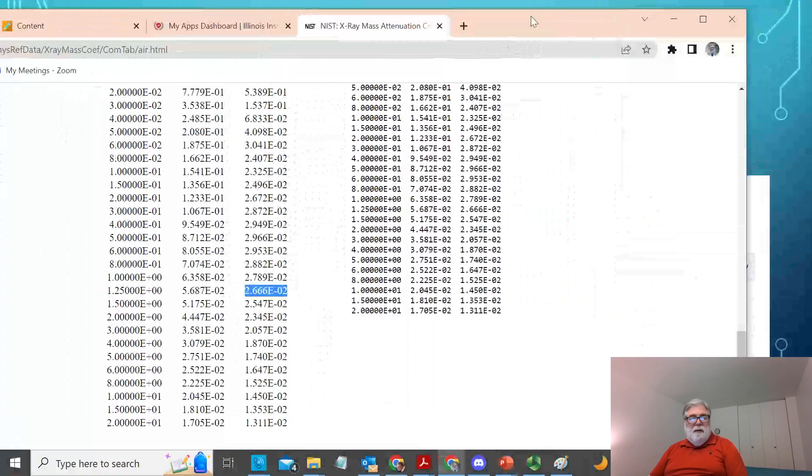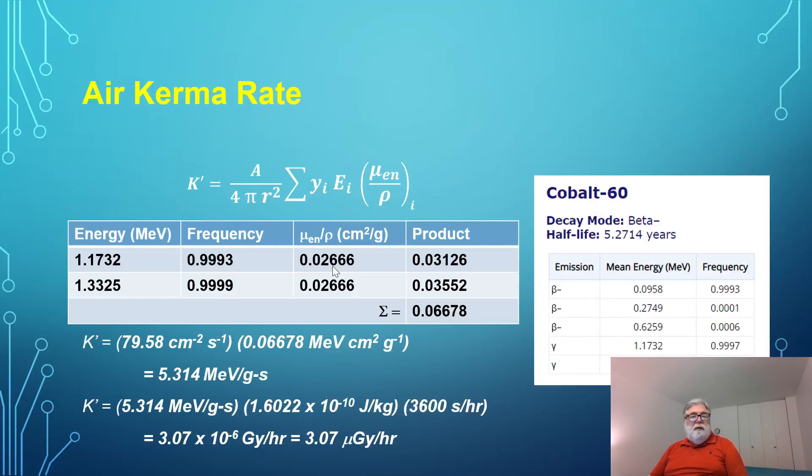I'm using both of them because both of these actually average out to 1.25 MeV. They're both very close. We could do some interpolation. This is going to be good enough for what we want to do. I have to multiply these three numbers together and get the product. We have to add up both products for the two different gamma rays, and that's the sum we get.